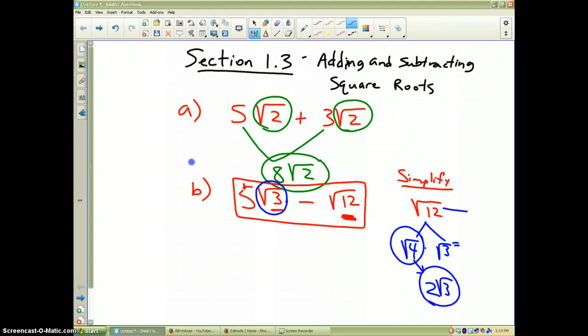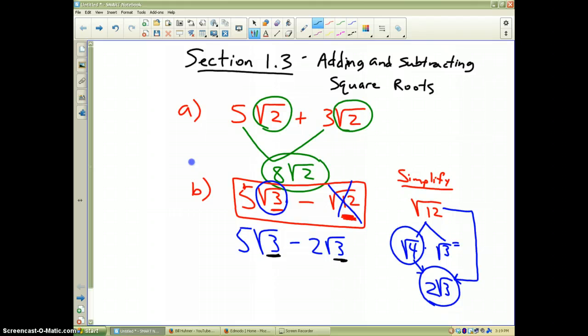The square root of 12 is the same as what I wrote in blue. Therefore I can cross this piece out and write 5 square roots of 3 minus 2 square roots of 3, and now underneath the square root is exactly the same. So 5 minus 2 is 3 and then the square root of 3 just stays as part of the answer and we are done.